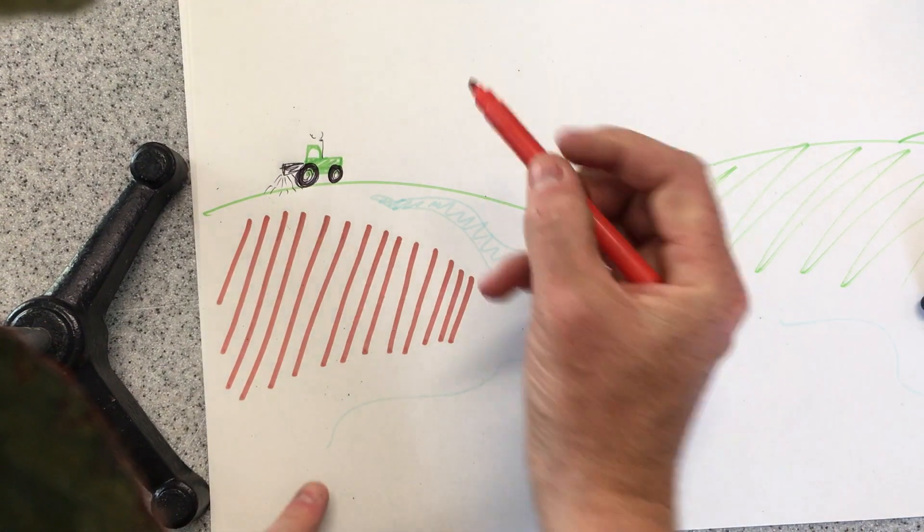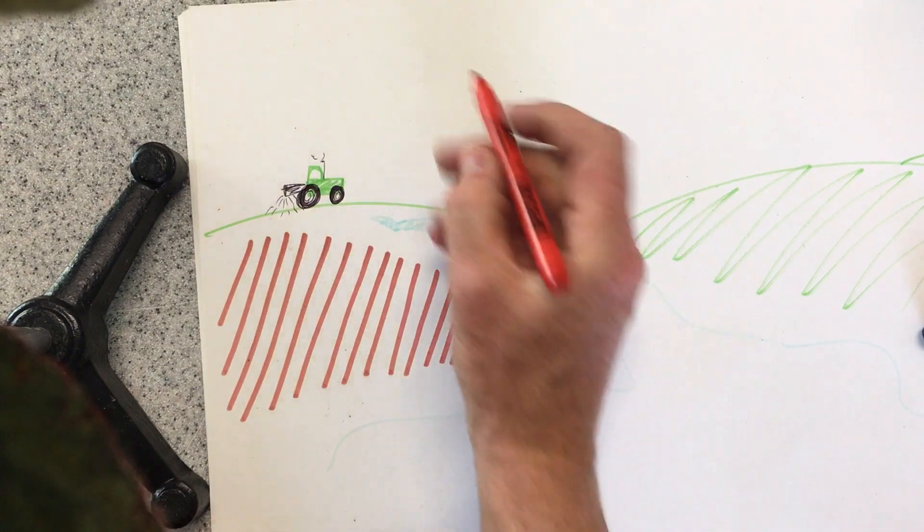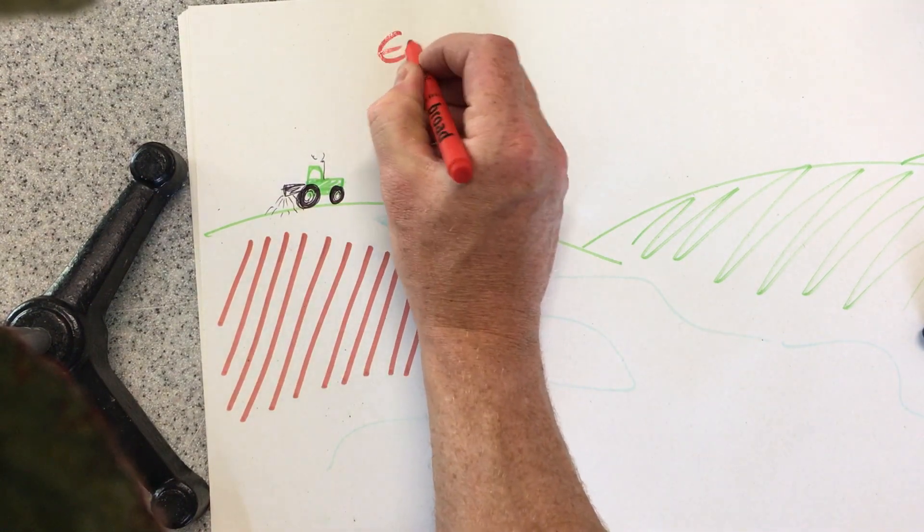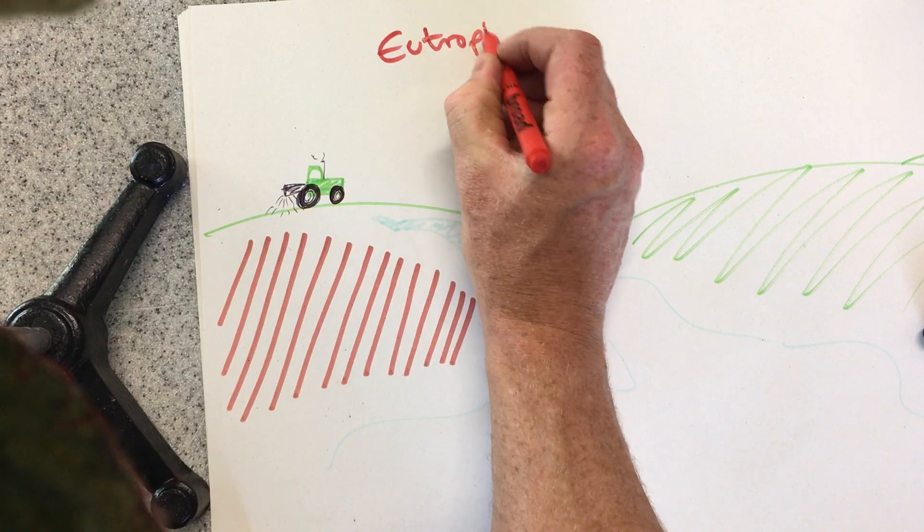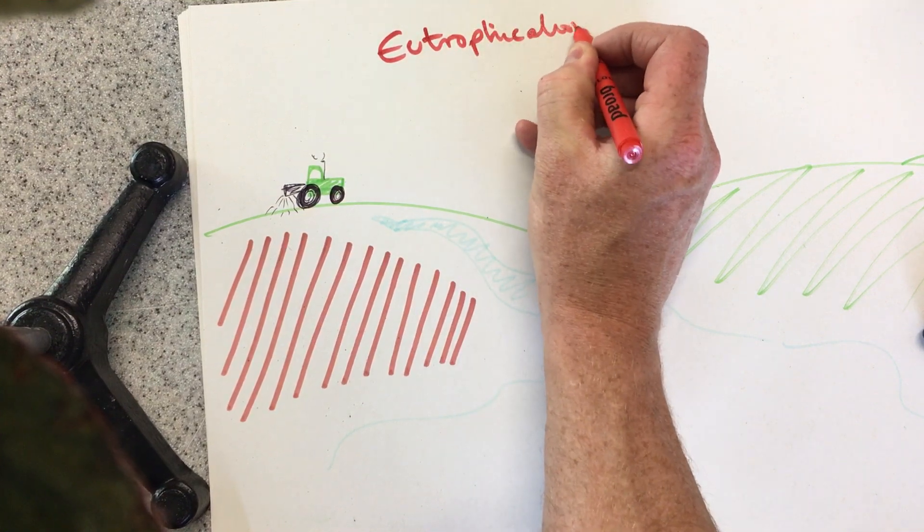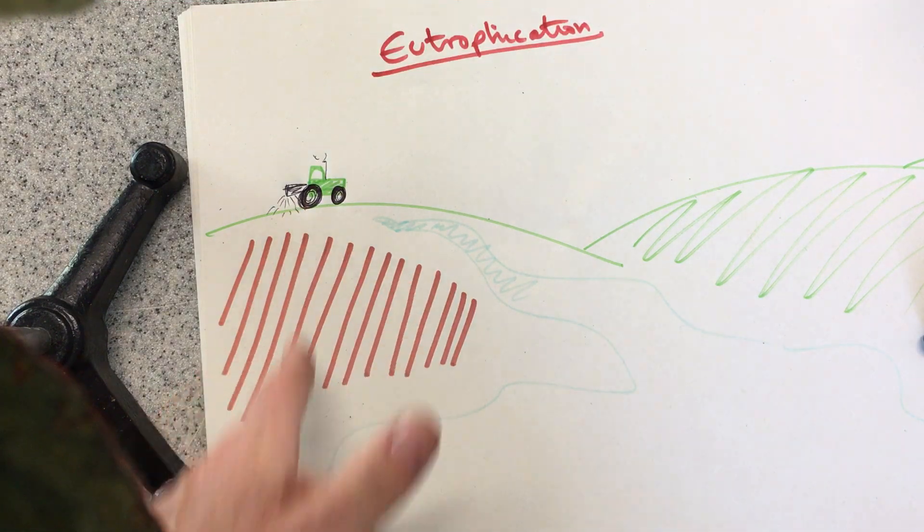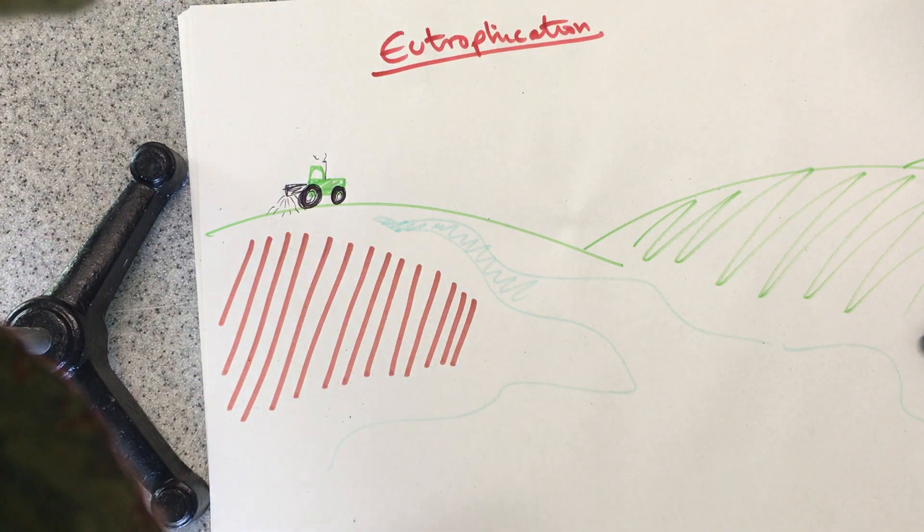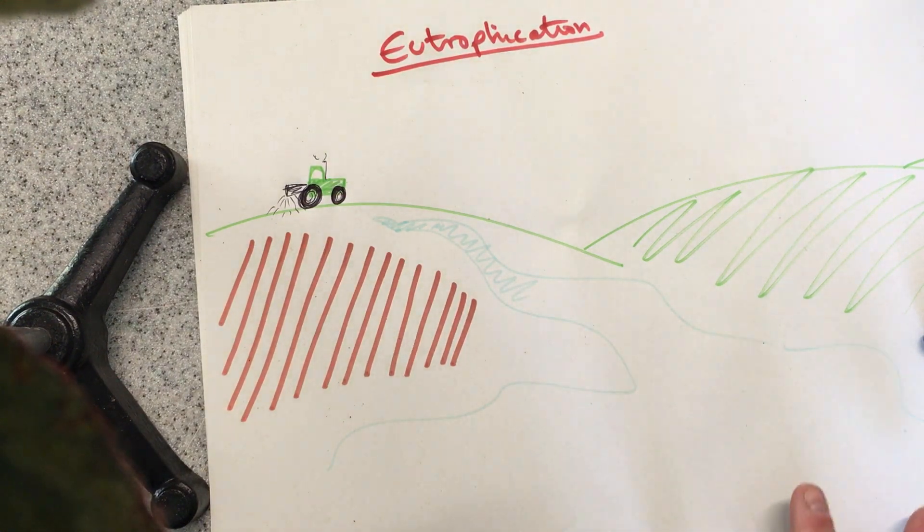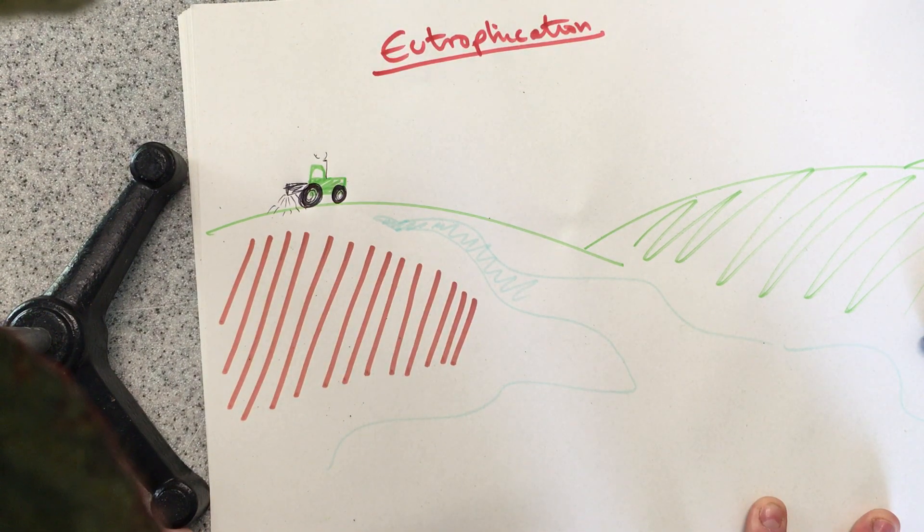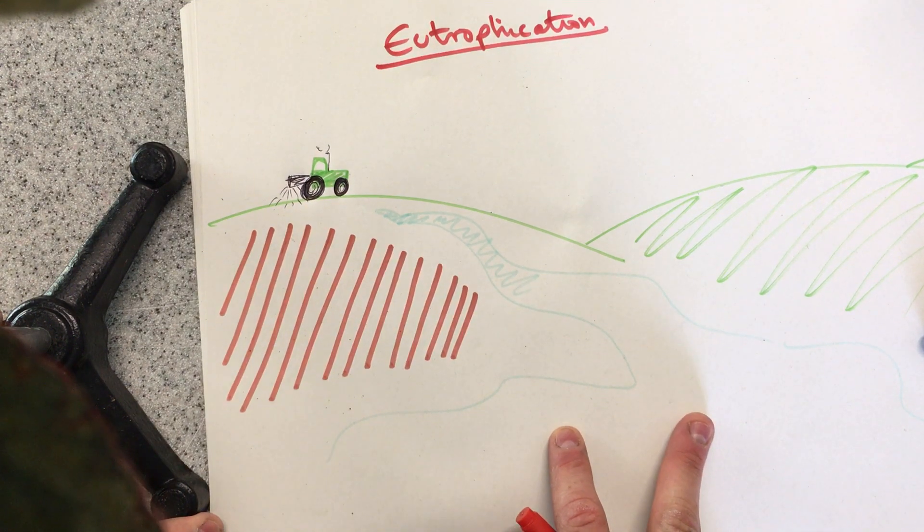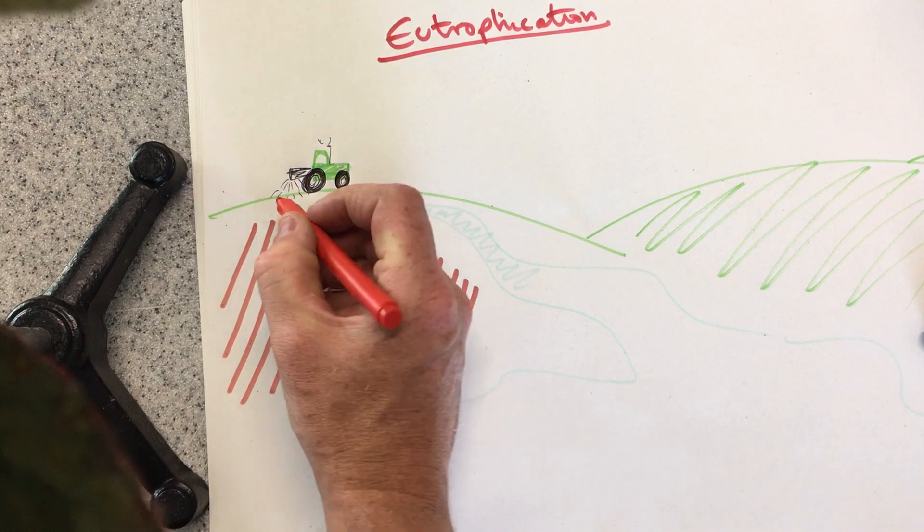Alright, so let's do eutrophication then. Like I said, it's on the screen. Alright, so we start off with the farmer spraying the field. We know that the farmer is fertilising the crop. We know that that increases yield and growth. So that's fine. But that's a human shaping the environment.